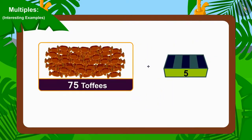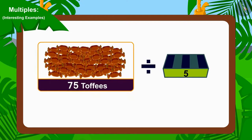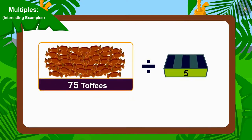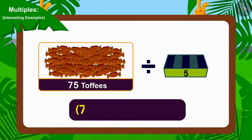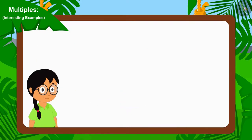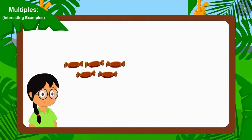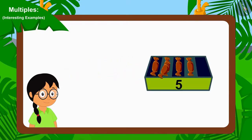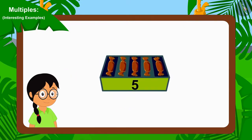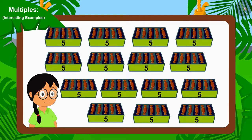Children, you have found the answer absolutely correctly. We can divide 75 by 5. In other words, 75 is a multiple of 5. Therefore, by forming a group of 5 toffees, Meenu can divide these toffees equally among her friends.